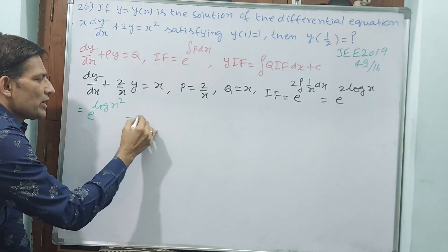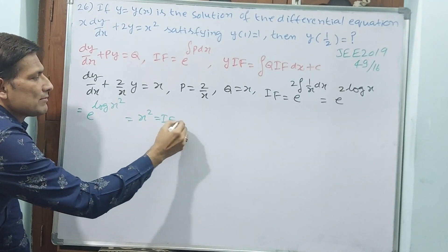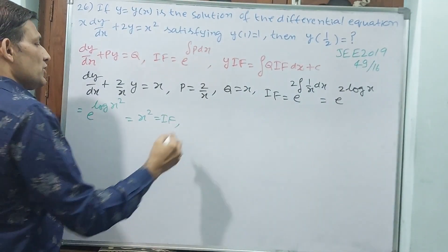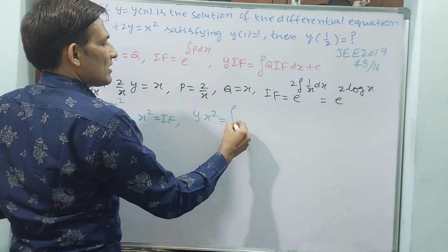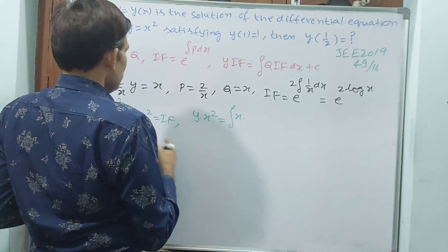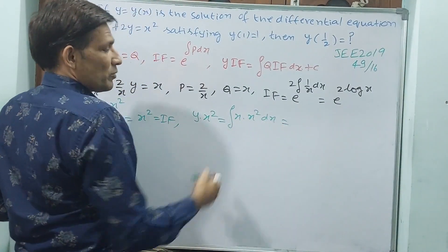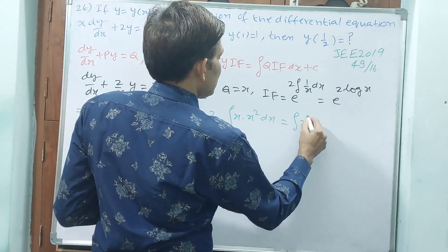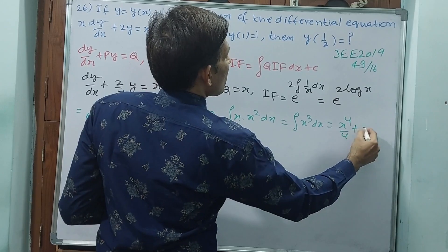Now e and log get cancelled, x square. This is your integrating factor. Now what is the solution? y into integrating factor x square equals integral of q x into integrating factor x square. x cube it is going to become. That means integral x cube dx equals x to the power of 4 by 4 plus c.